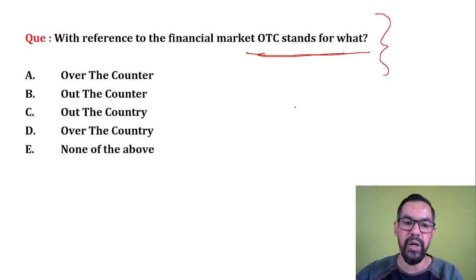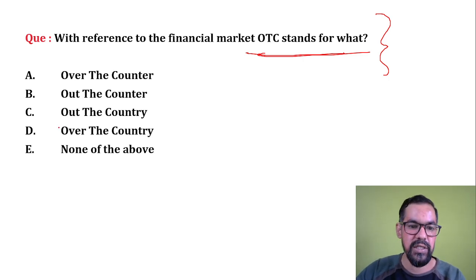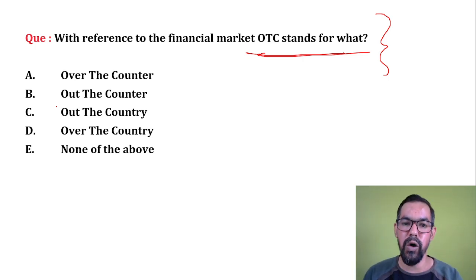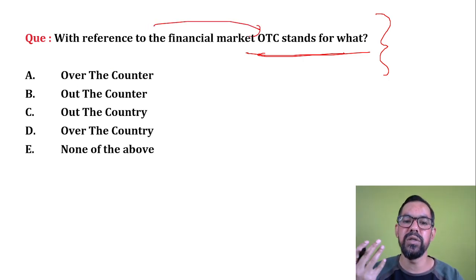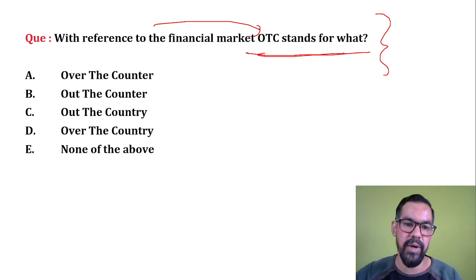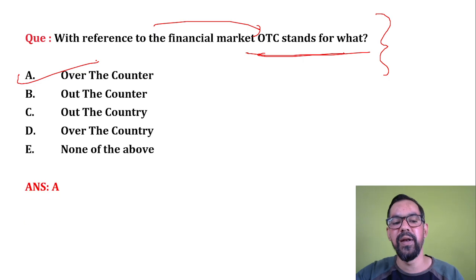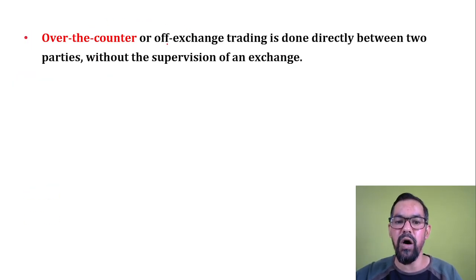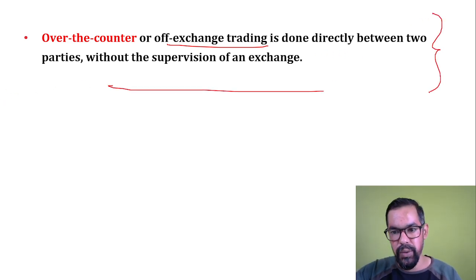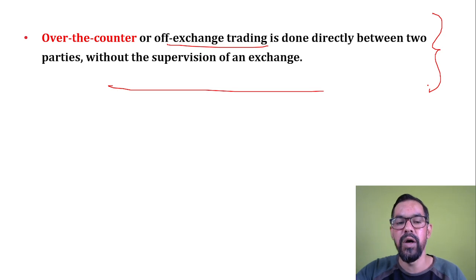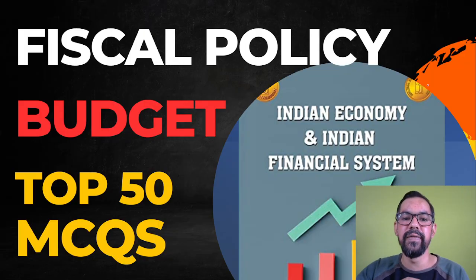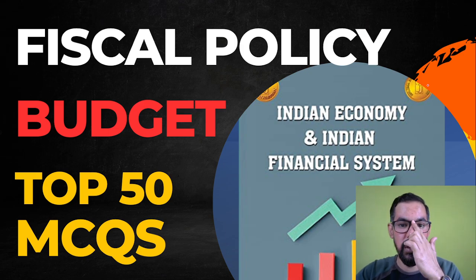OTC stands for Over The Counter trade. In over-the-counter or off-exchange trading, transactions are done directly between two parties without the supervision of an exchange. Nowadays, OTC is commonly used in forex, swaps, and forward contracts. Previously, when organized markets were not available, most trading was done in an OTC manner. Option A is correct.